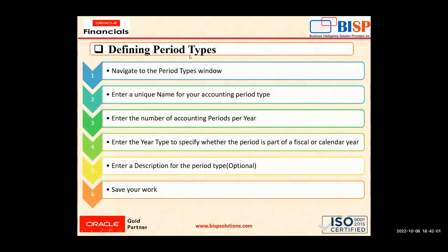So first we will define the period type in EBS. We navigate to the period type window, then enter a unique name for the accounting period type, then enter the number of accounting periods per year. In the next step we enter the year type to specify whether the period is part of a fiscal or calendar year, enter an optional description, and then save our work.